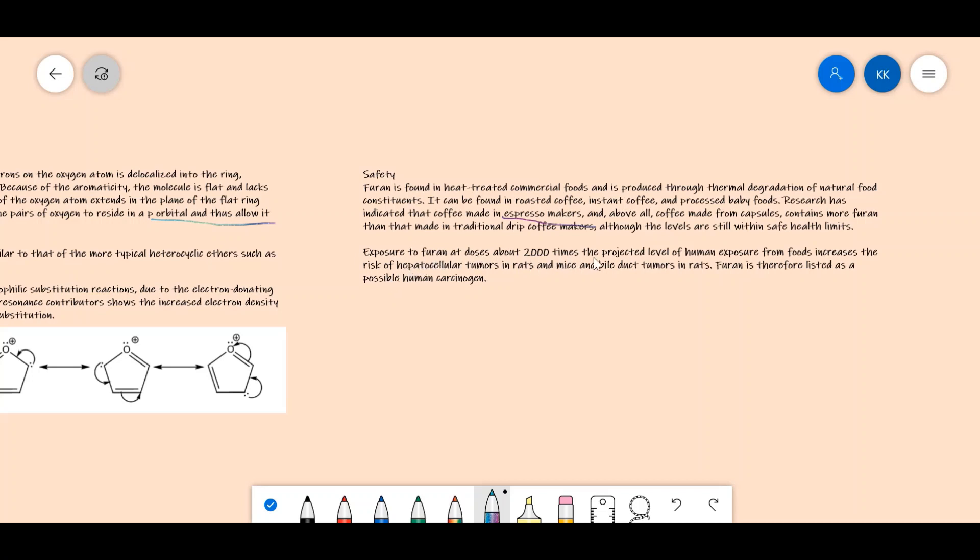Exposure to furan at doses about 2000 times the projected level of human exposure from food increases the risk of hepatocellular tumors in rats and mice. They also noticed bile duct tumors in rats. Hence, furan is listed as a possible human carcinogen. But the doses were around 2000 times the projected level of human exposure from foods, and no conclusive reports of human carcinogenic effects at low doses have been observed as of now.